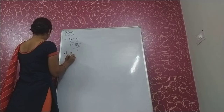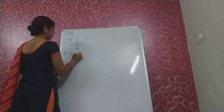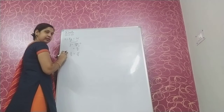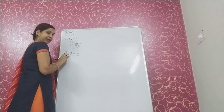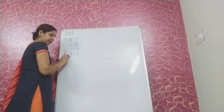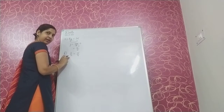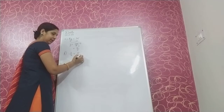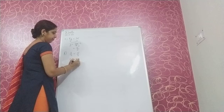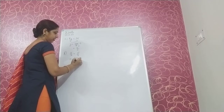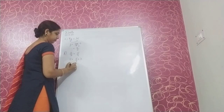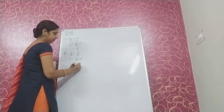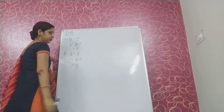Next, z upon 3 is equal to 5 upon 4. Here z is dividing by 3. We transpose this 3 to the other side where it will multiply. So z equal to 5 upon 4 multiplied by 3. 5 multiplied by 3 is 15 upon 4.